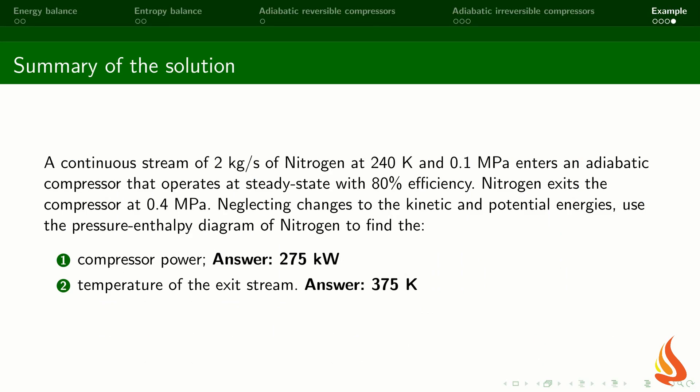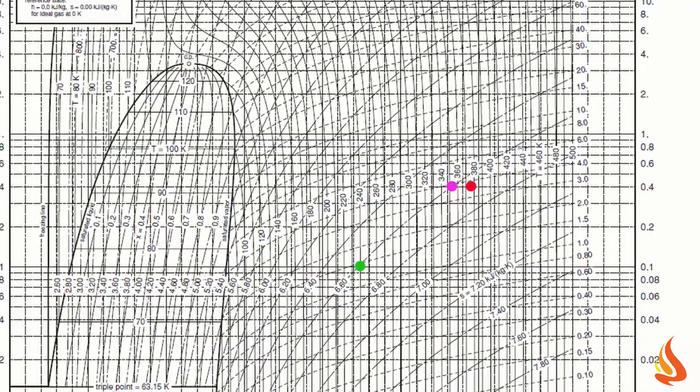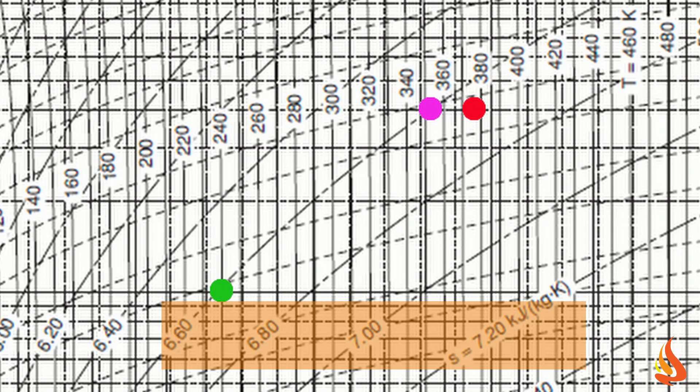Here is a summary of our solution: we found 275 kW as the compressor power and 375 K as the temperature of the output stream. Finally, it is interesting to observe that the specific entropy of the state represented by the red dot is greater than the specific entropy of the state represented by the pink dot. This difference in specific entropies times the mass flow rate gives the entropy generation rate.